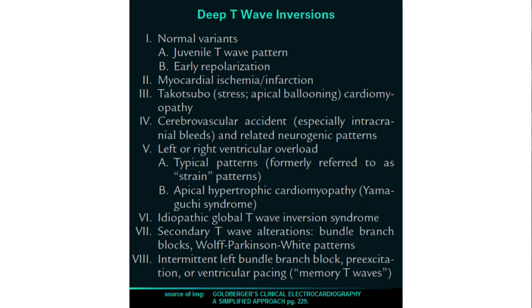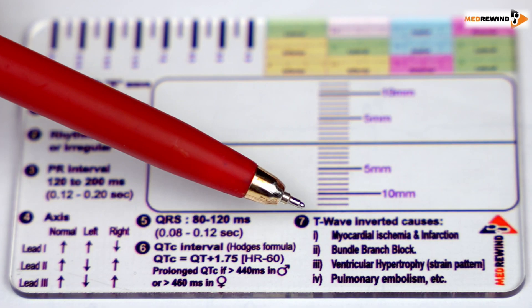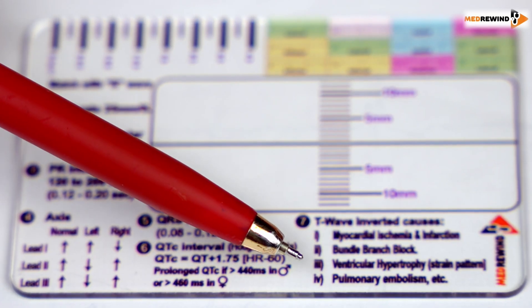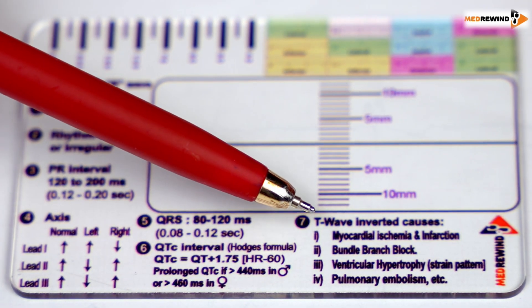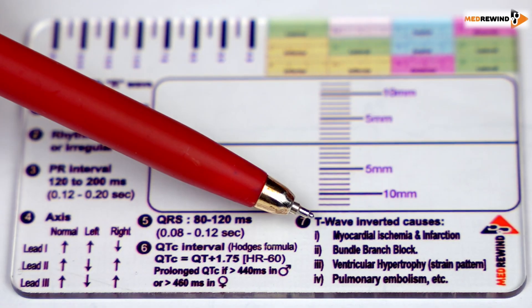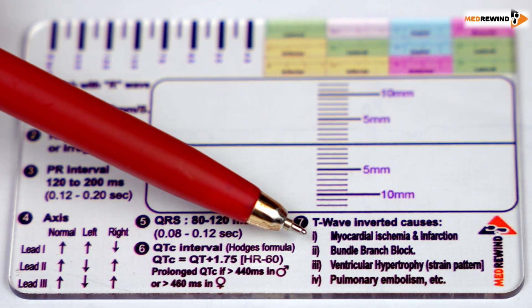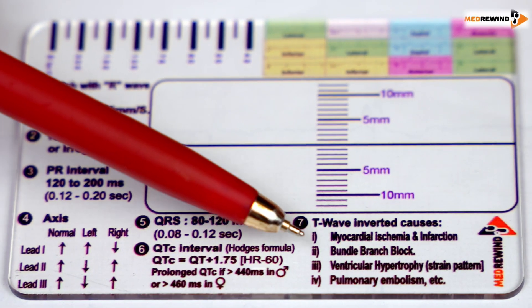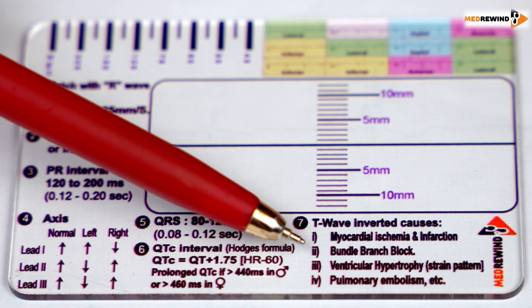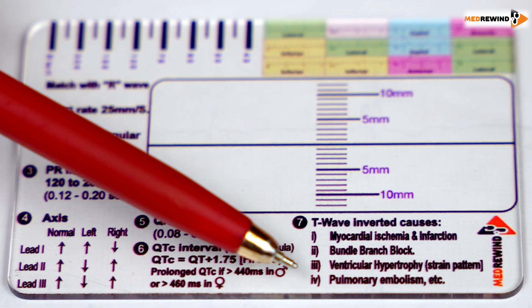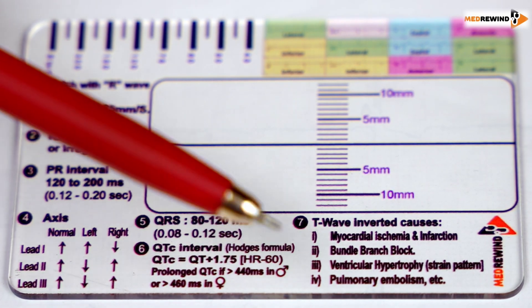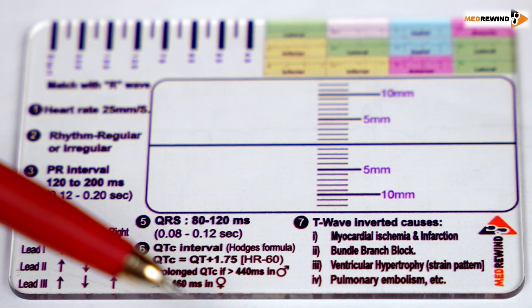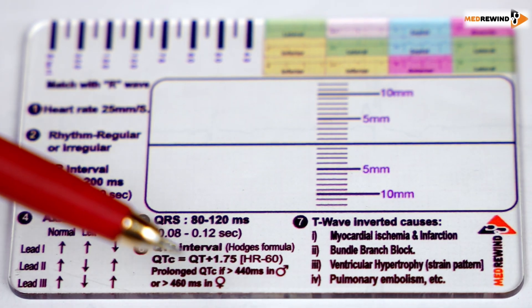The last step is Step 7, where we will discuss the causes of T wave inversions. It might be normal in some people, but these are some important causes to assess: first, myocardial ischemia or infarction; second, bundle branch block; third, ventricular hypertrophy strain pattern; fourth, pulmonary embolism — and it can also be seen in some thyroid disorders.